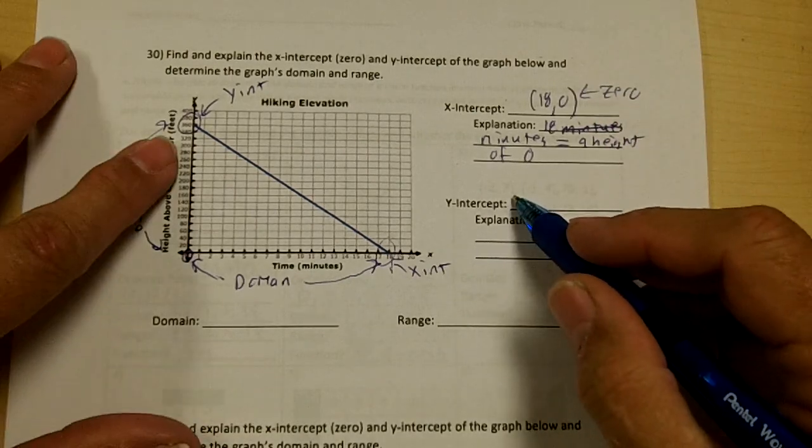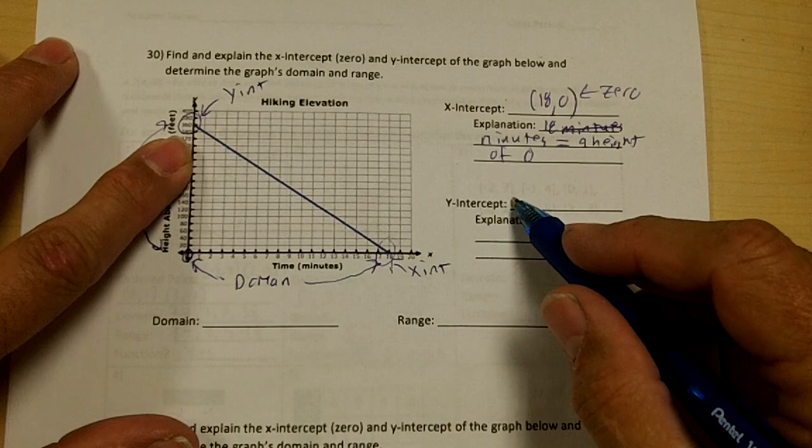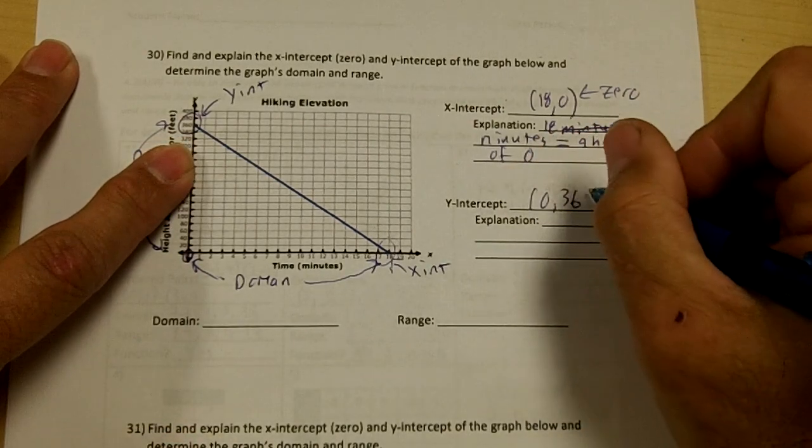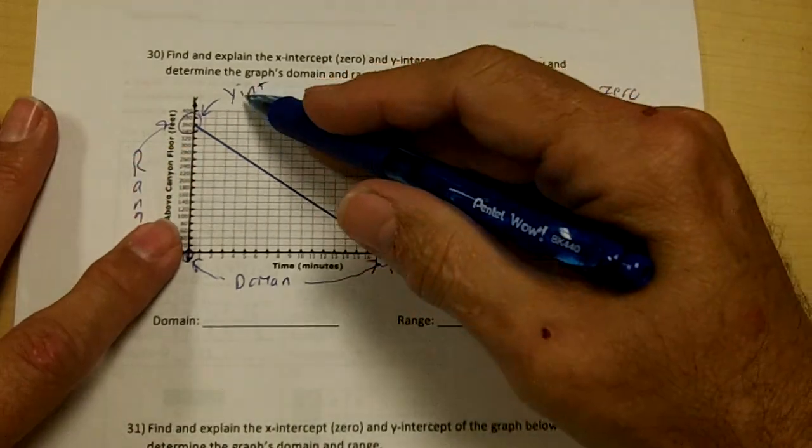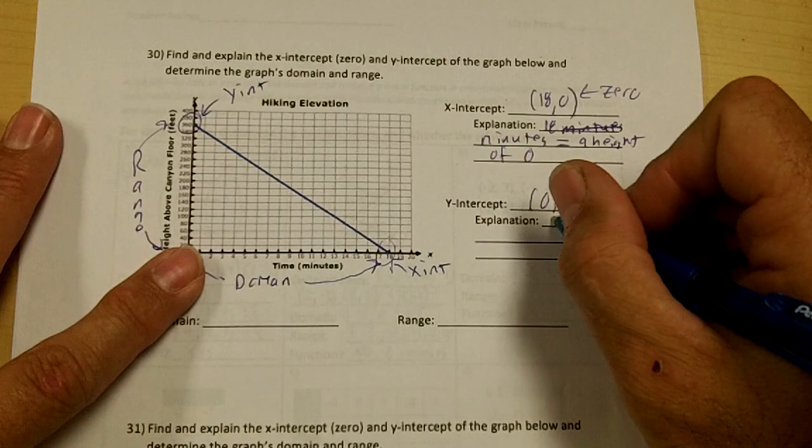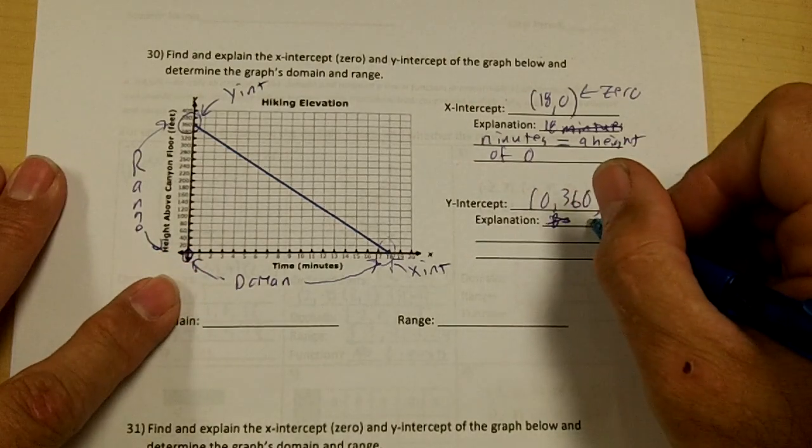My y-intercept is right here and it's zero comma 360. Your y-intercept basically is the starting number or the beginning height. So the beginning height or you could put at zero minutes.